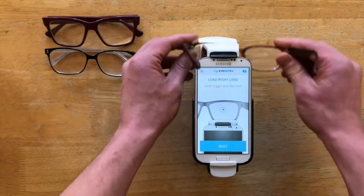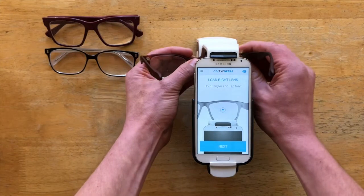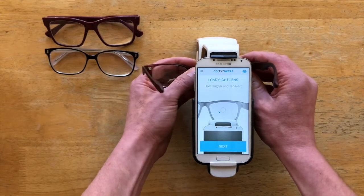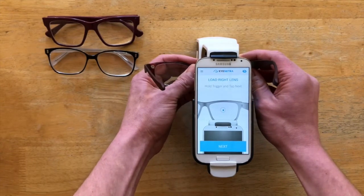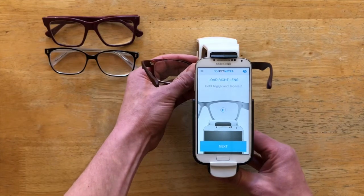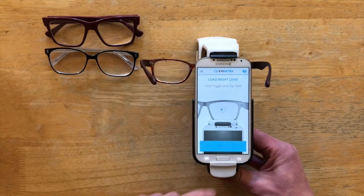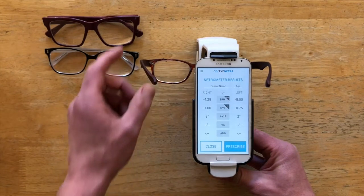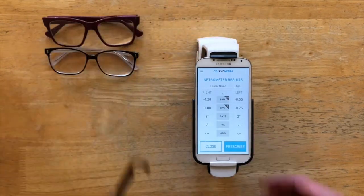And then just repeat on the other side. Right lens, insert, align the dot in the circle, squeeze the trigger to hold them in place, and tap next. And there are my results. That was easy.